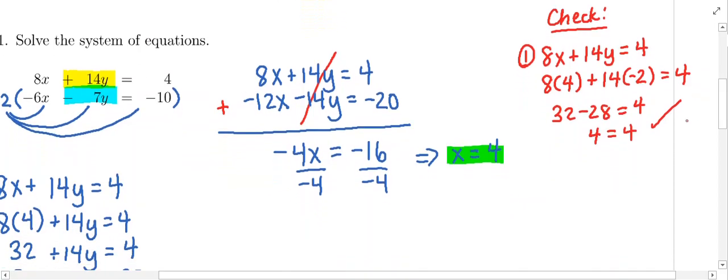It is not good enough to just check one. Remember, the solution has to work in both equations. It may work in the first, but not the second one. So let's substitute into the second equation. Negative 6x minus 7y equals negative 10.